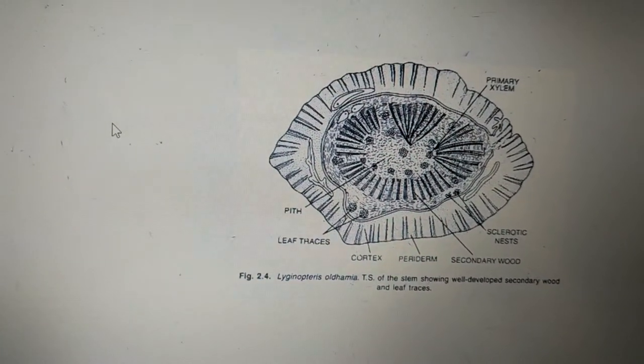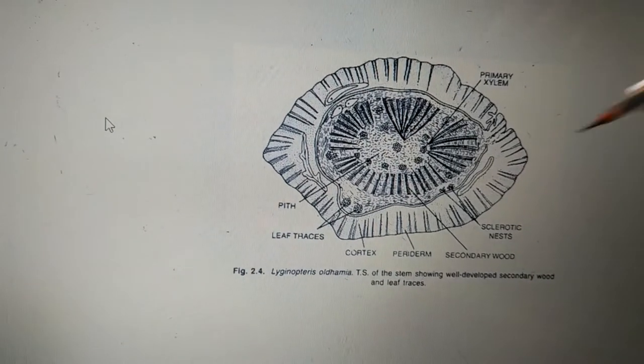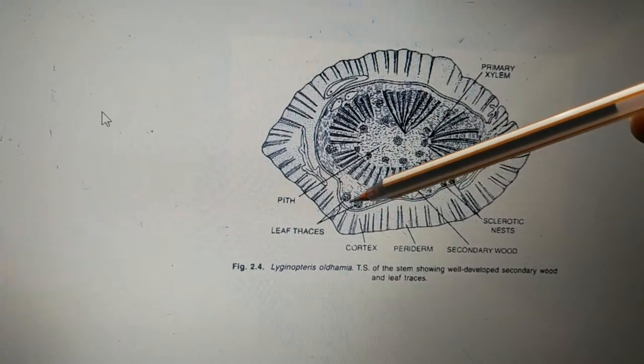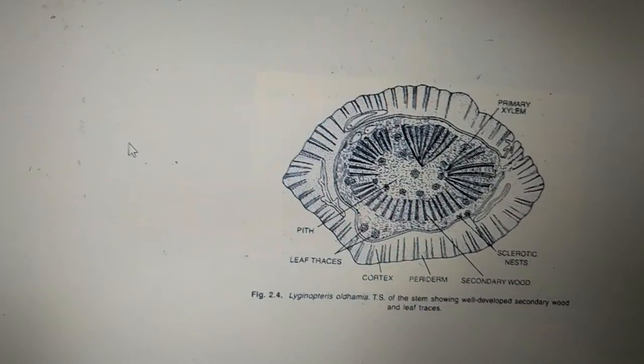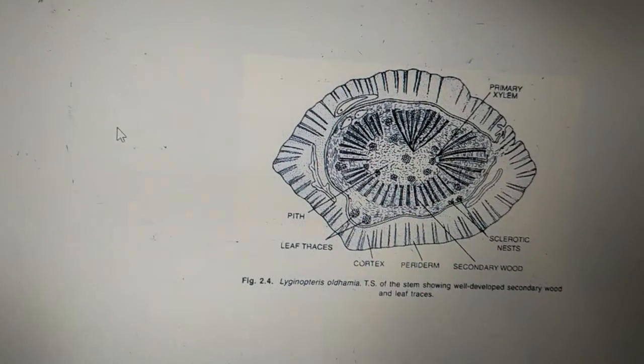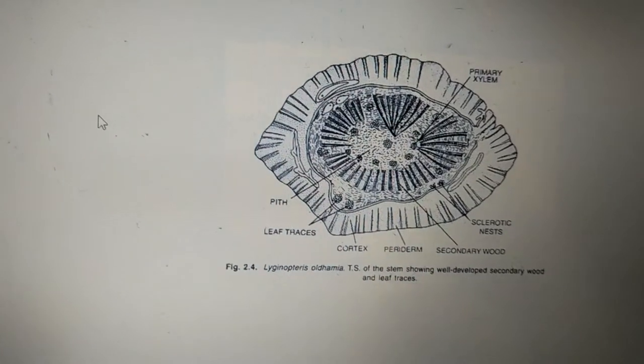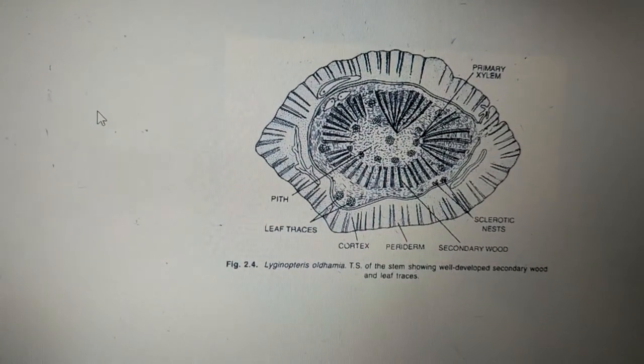We have even leaf traces present, so presence of the leaf trace is an indication that it had an ectophloic siphonostele. The stele was ectophloic siphonostele.